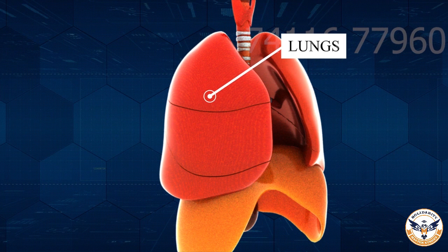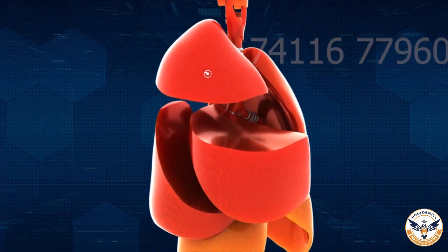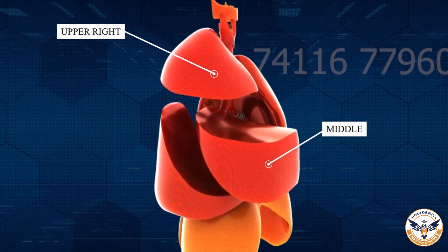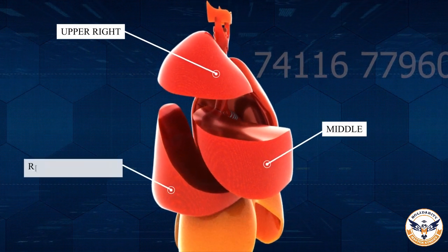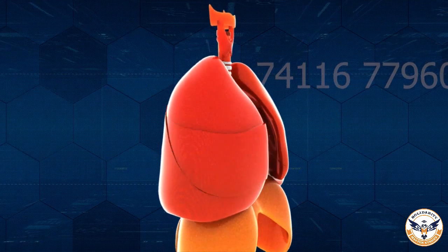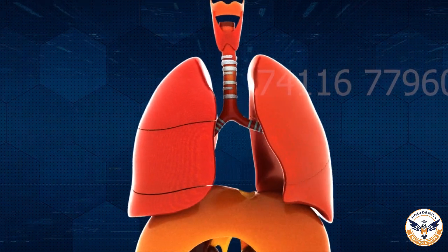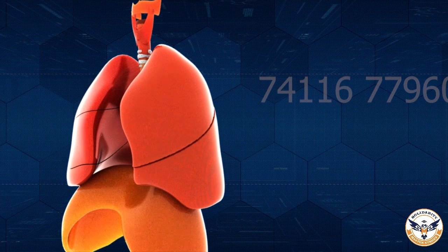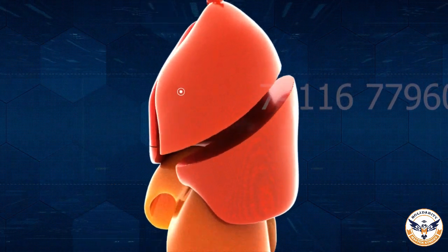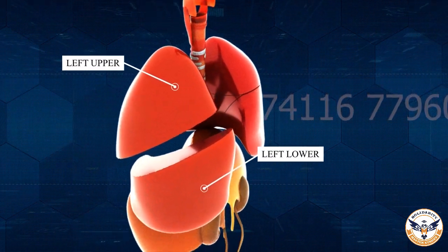The right lung is divided into three lobes: the upper right, middle, and the right lower lobe. The left lung is smaller and has only two lobes: the left upper and the left lower lobe.